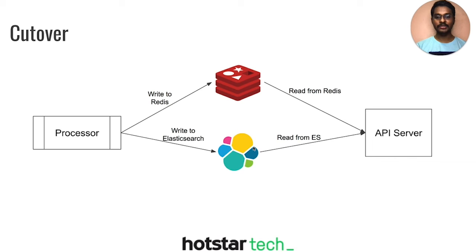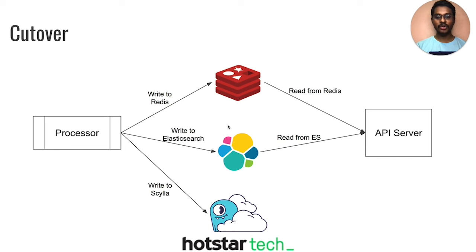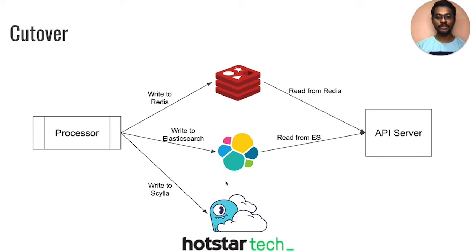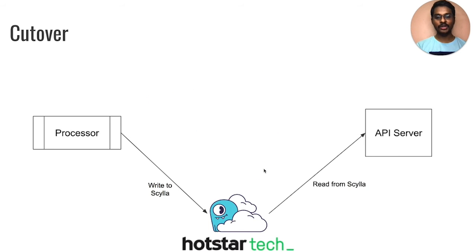Let's talk about how we cut over from the old architecture to the new architecture. We used two data sources — Elasticsearch and Redis — in our previous setup. Once the Scylla Cloud data migration was complete, we started parallel writing our data to Scylla Cloud. Once we had 100% confidence that the Scylla Cloud data was good, we started reading from Scylla as well via our API servers. Once that was complete, we simply cut over from the older data stores. In this way, we completely avoided any downtime when migrating from the old architecture to the new architecture.